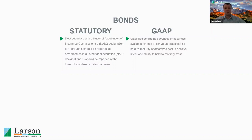Under statutory, bonds are rated by the National Association of Insurance Commissioners, or NAIC, and depending on that rating — one through six — it changes how the investment is reported. NAIC designations of one through five will be reported at amortized cost, while all other debt securities at NAIC designation six will be reported at the lower of amortized cost or fair value.